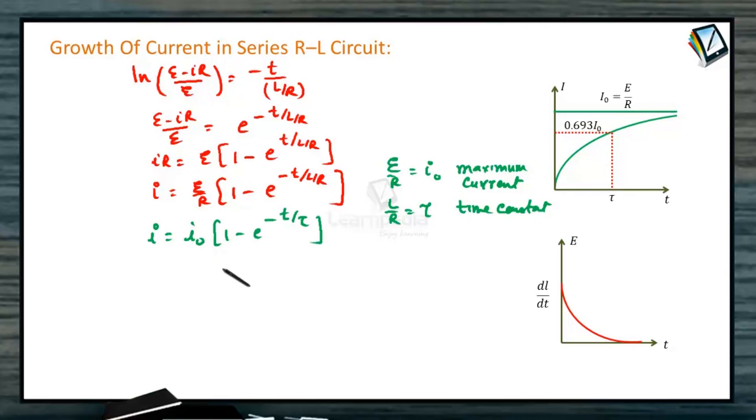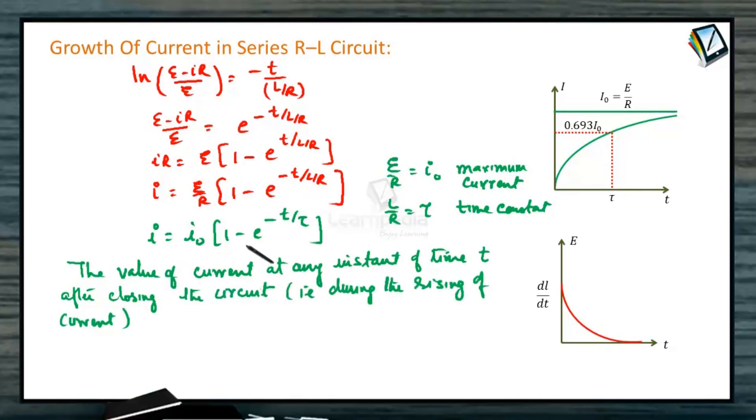If we differentiate it, di by dt, we can get how the current is going to decrease in the given circuit. The value of current at any instant of time after closing the circuit during the rising of current is given as I equals I0 times 1 minus e to the power minus t by tau, where I0 is the maximum current, which is E by R, also called the steady state current. I hope you can now answer the question.